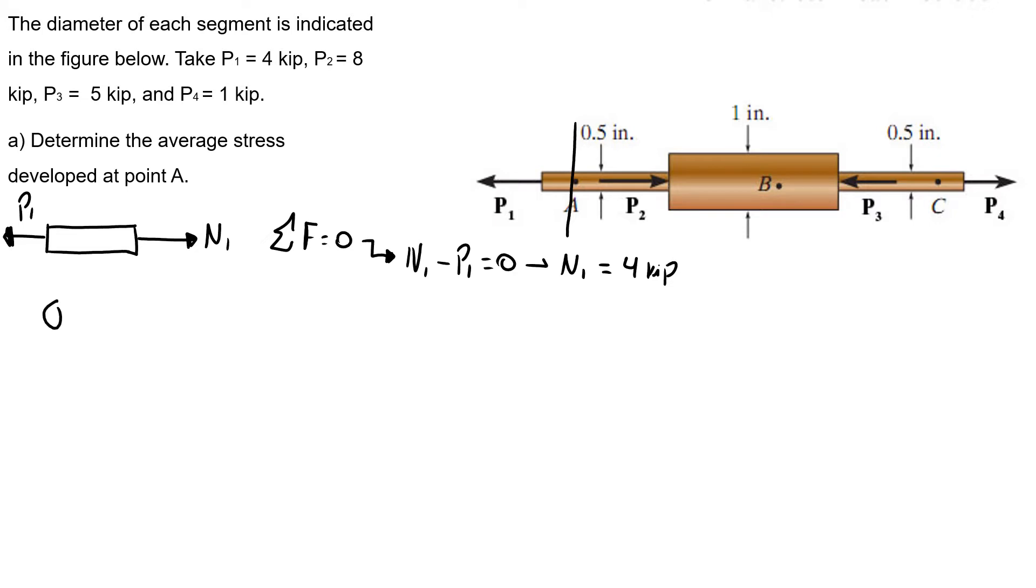Now, our stress equals N1, our force over our area. That diameter is half an inch. So my stress 1 will be 4 kip over pi over 4 times 0.5 squared in square inches. So our stress equals 20.4 ksi. This is our letter A.